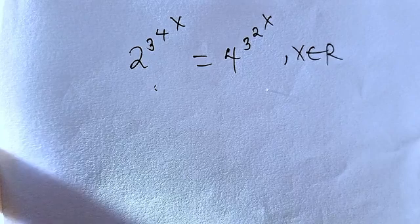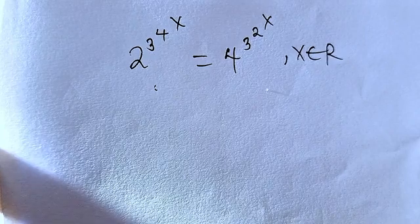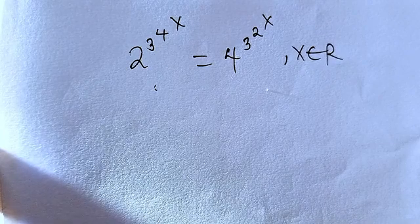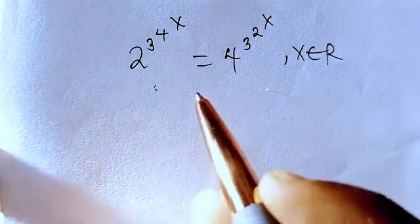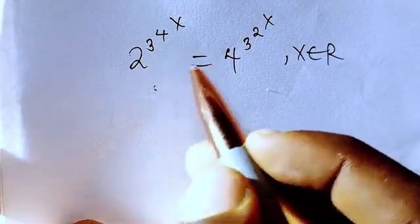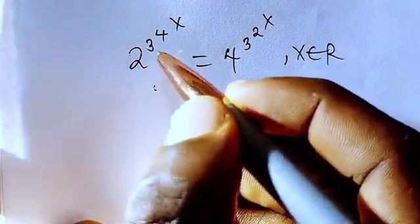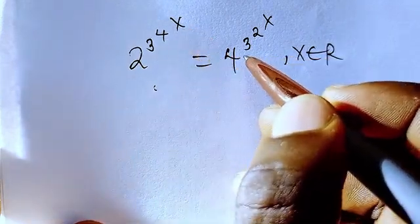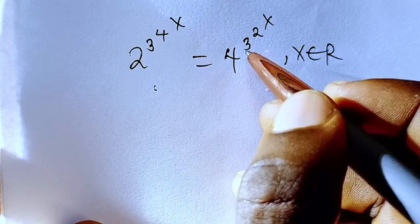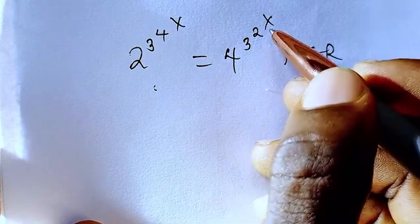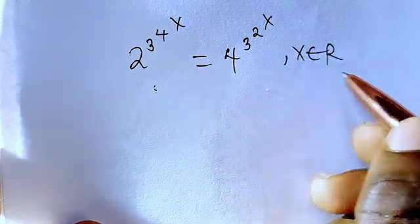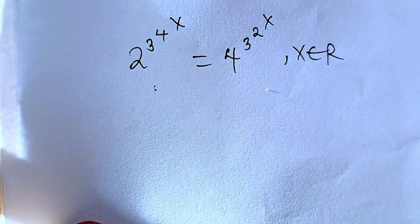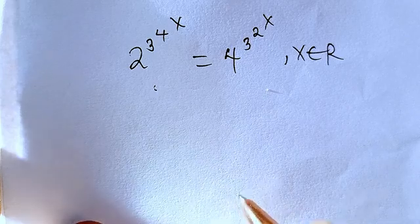Hello, good viewers, you are highly welcome to this tutorial. We are going to be solving this problem: we have the exponential equation 2 to the power of 3 to the power of 4, then 2 to the power of x equals 4 to the power of 3 to the power of 2 to the power of x. The value of x must belong to the set of real numbers.